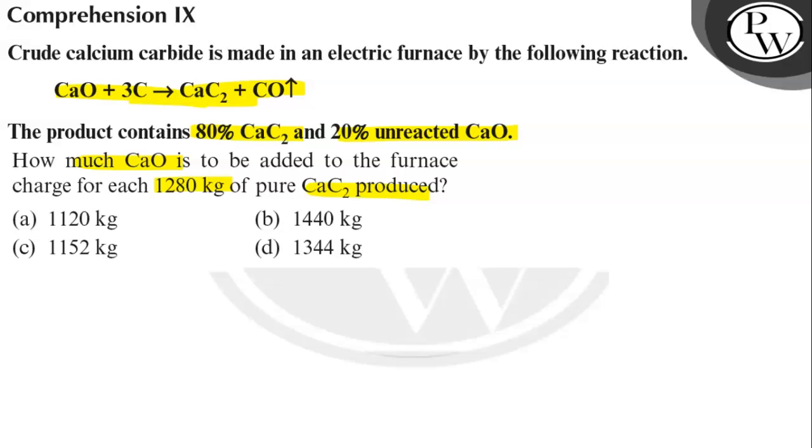So for getting 1280 kg pure CaC2, the CaO required is 56 by 64 - the molecular weights we have mentioned here - multiplied by its weight 1280. We will get 1024 kg.